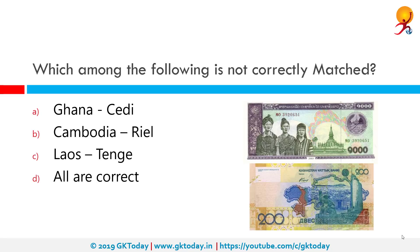Which among the following is an incorrect match? The correct answer here would be Laos matched with Tenge. Laos's currency is in fact Kip, and Tenge is the currency of Kazakhstan.